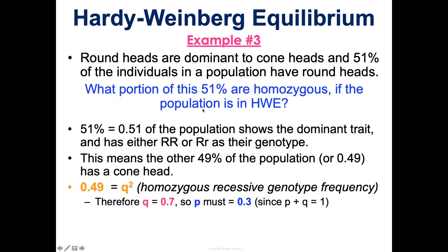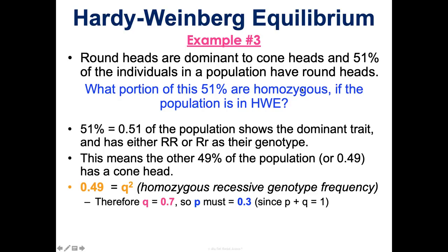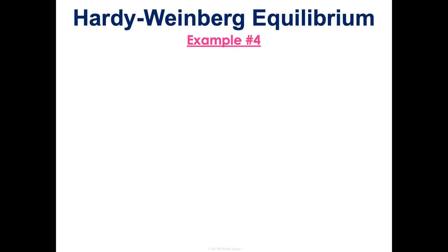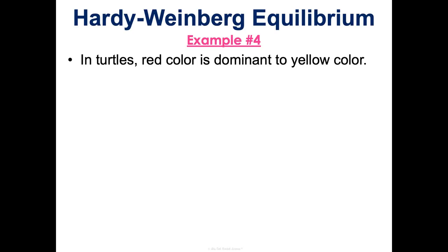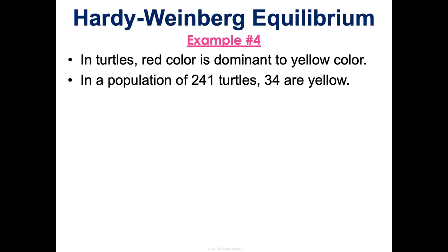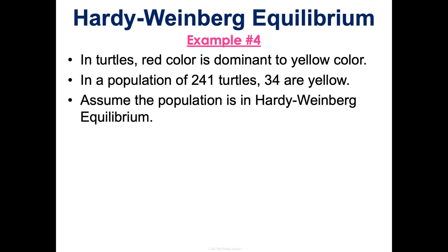From there, to find the proportion of the population that's homozygous dominant — big R big R — that's p². If p is 0.3, we square that to get 0.09, or 9% of the population is homozygous dominant. Now let's do another example: in turtles, red color is dominant to yellow. In a population of 241 turtles, 34 are yellow. Let's assume the population is in Hardy-Weinberg, which means we can use the p² + 2pq + q² equation.